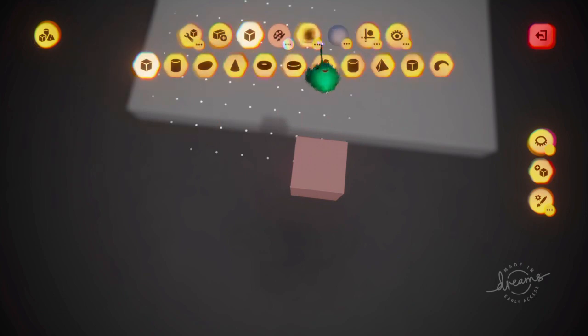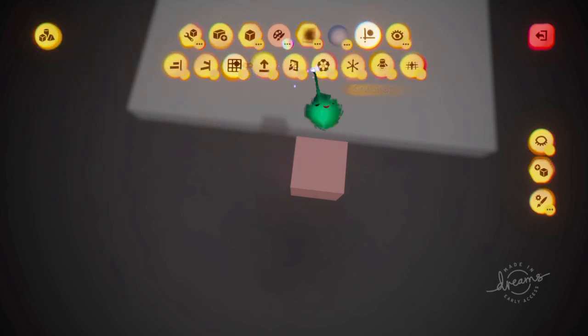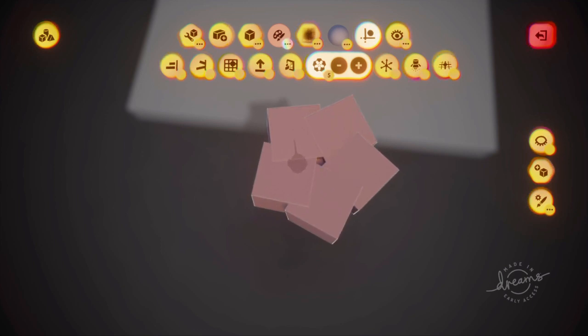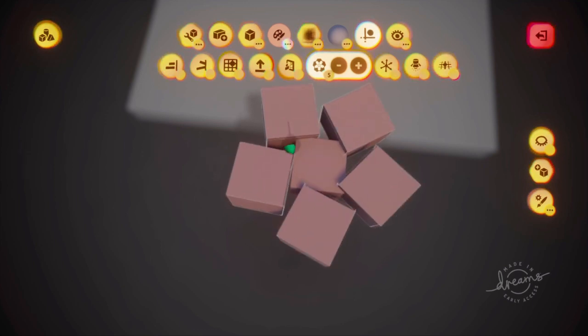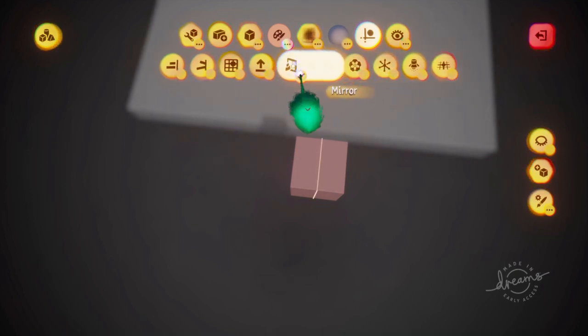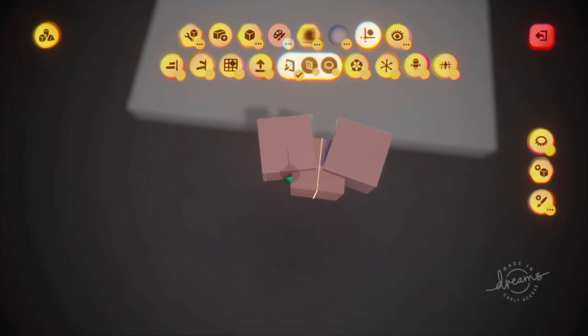Now if I turn off grid and use kaleidoscope, you can see they all revolve around that center point right there. And if you use the mirror, that uses that center point, that center origin point also.